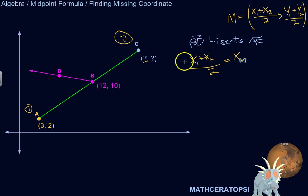We know the first x-coordinate is 3, so we can write this as 3 plus x over 2, where we don't know x, equals the x-coordinate of the midpoint, which equals 12.